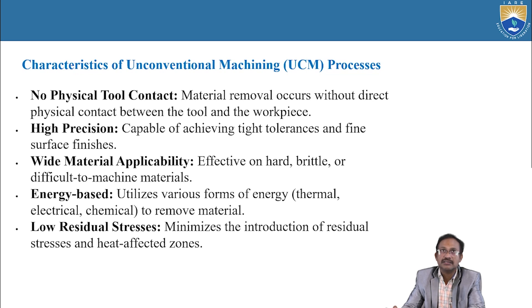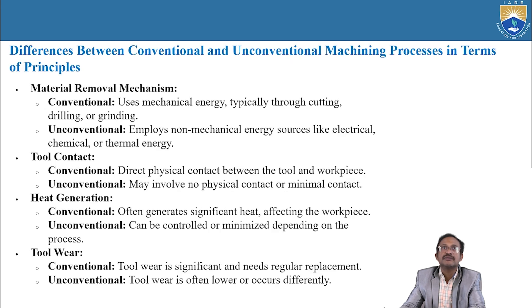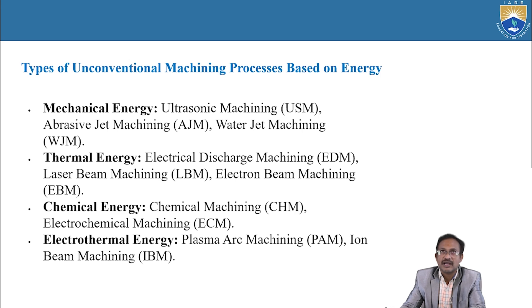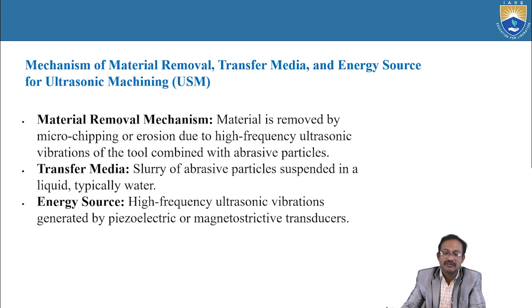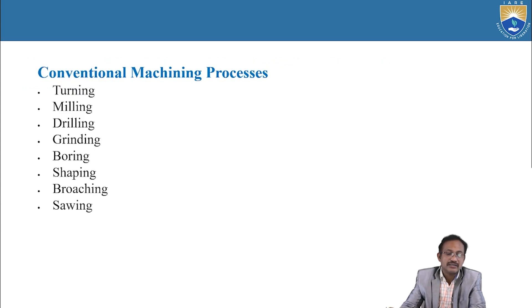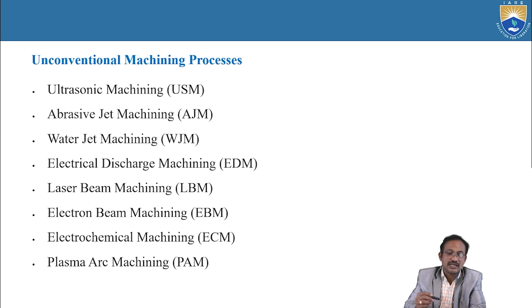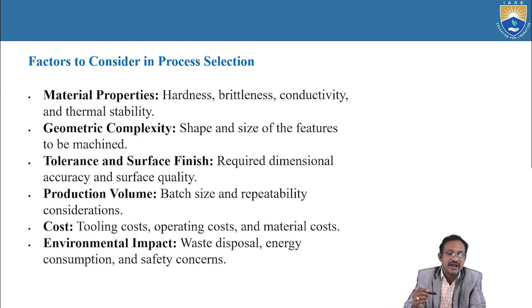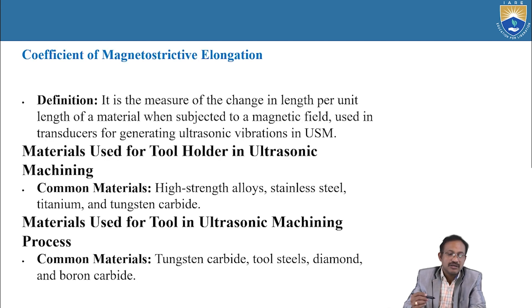Let us see the overall presentation. Topics include: characteristics of conventional machining process, difference between conventional and unconventional machining process in terms of principles, types of unconventional machining process based on energy, mechanism and material removal, transfer media and energy source for ultrasonic machining and conventional machining processes.